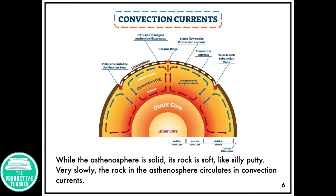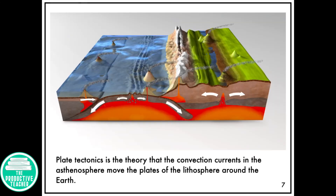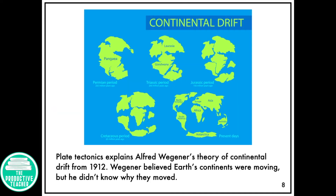Very slowly, the rock in the asthenosphere circulates in convection currents. Plate Tectonics is the theory that the convection currents in the asthenosphere move the plates of the lithosphere around the Earth. Plate Tectonics explains Alfred Wegener's theory of continental drift from 1912.